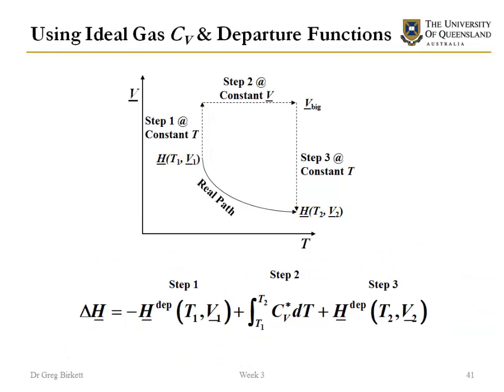If we had departure functions, then the same as with the internal energy, we can calculate this step and this step just using departure functions. So step one is the negative of a departure function from real to ideal, and then step three is the departure function from ideal to real.